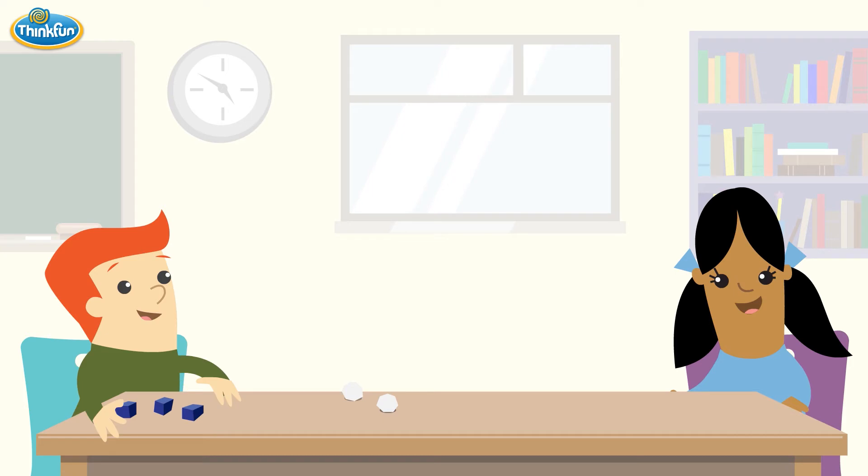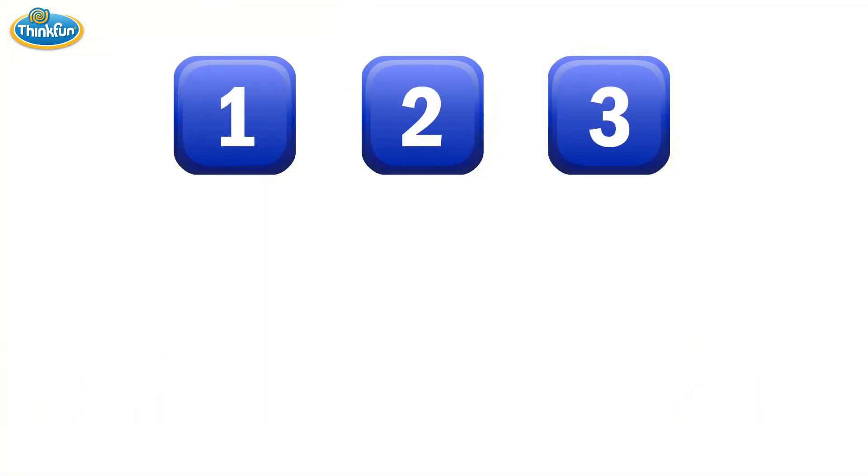Now let's roll the three scoring dice to get our scoring numbers. The goal of Math Dice is to combine the scoring numbers in a math expression to match or come closer to the target number than your opponents.